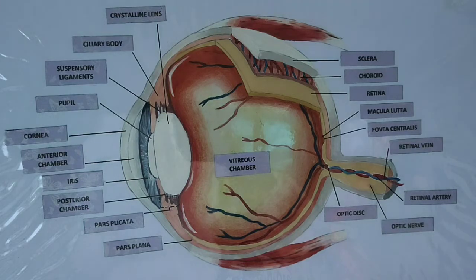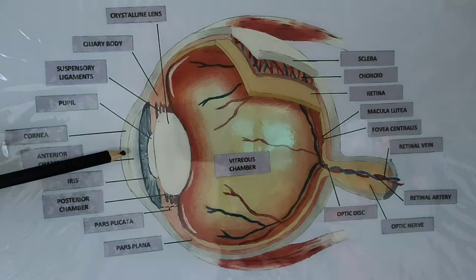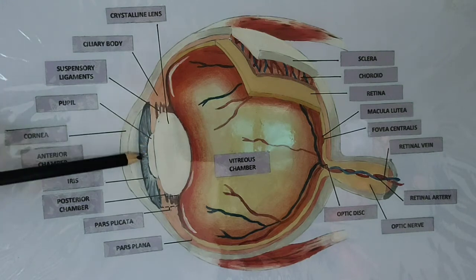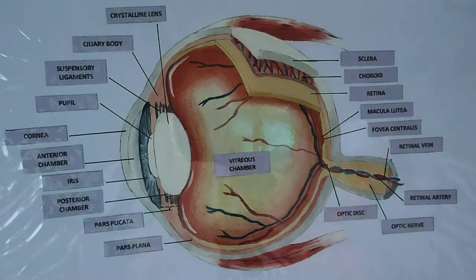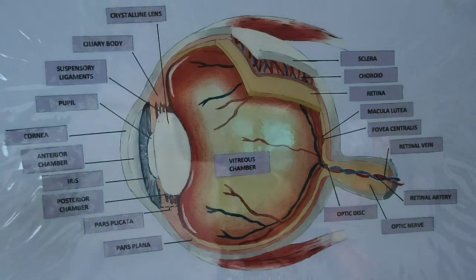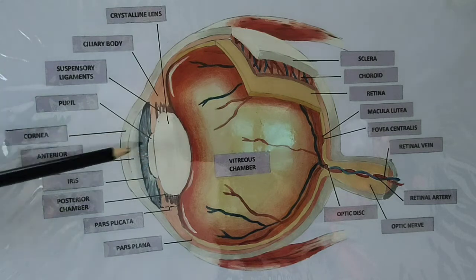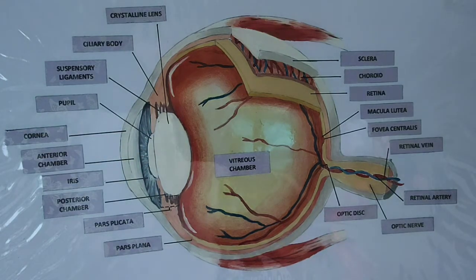The light that passes through the cornea will pass through this area here. This second area is what we call the anterior chamber. After that, the light will go through this area here. It's actually a space, not a structure per se. It's a space we call the pupil.